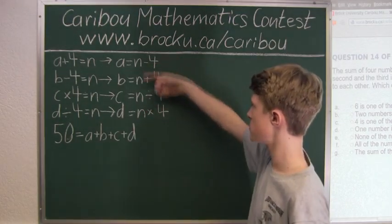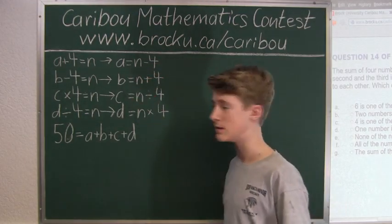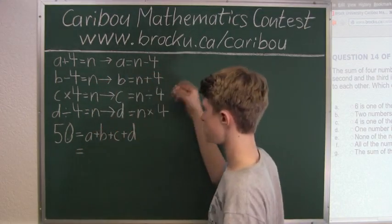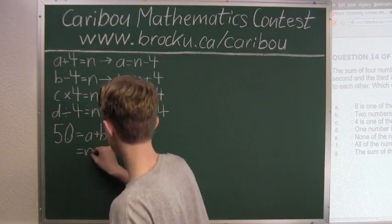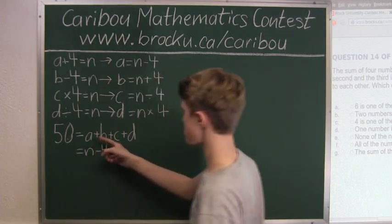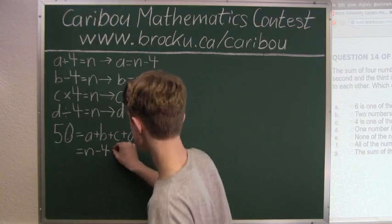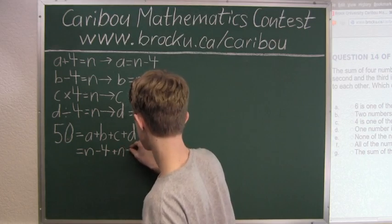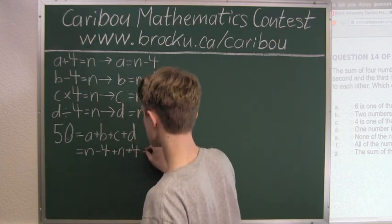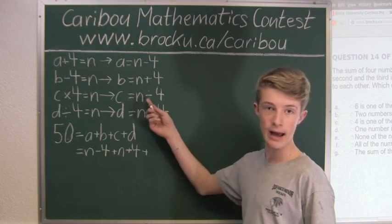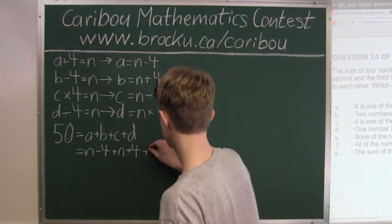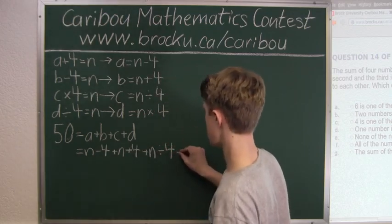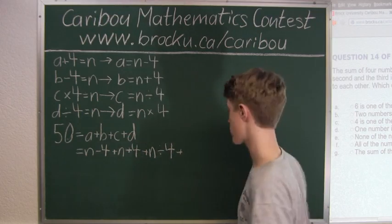Now we will substitute these values in for A, B, C, and D. So we will have N minus four plus B, which is plus N plus four. Then we have plus C, which is N divided by four. And then we have plus D, which is N times four.